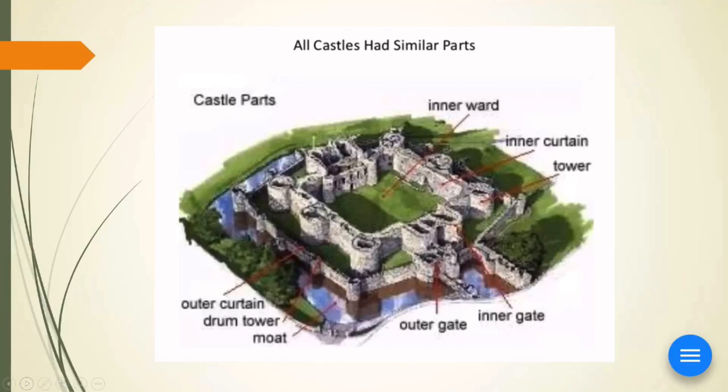So castles had many similar parts. They had round towers, also known as turrets. They had inner and outer walls, inner and outer gates. Great place for trapping your enemies. A lot of them had moats, although not all of them did.